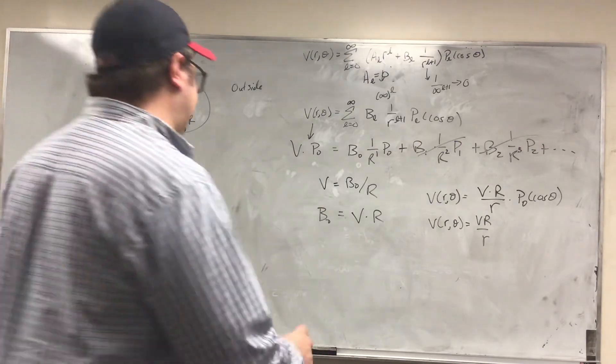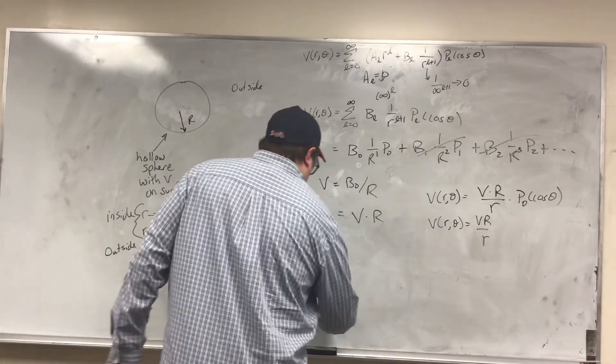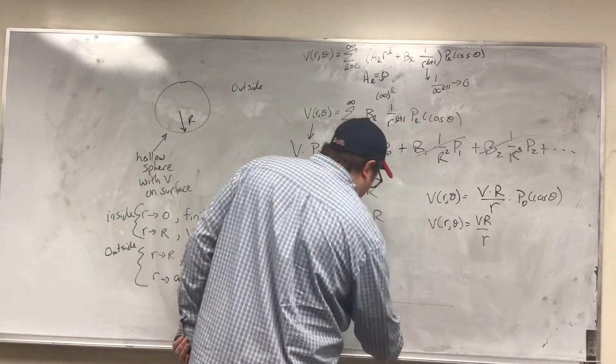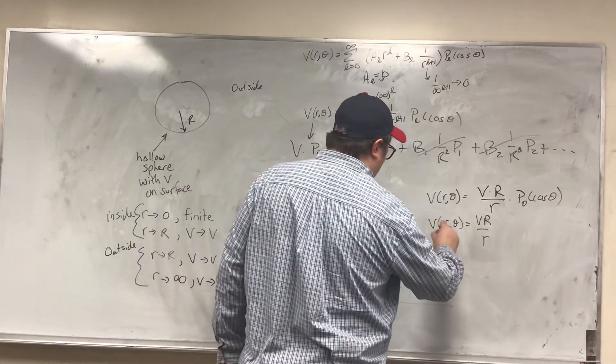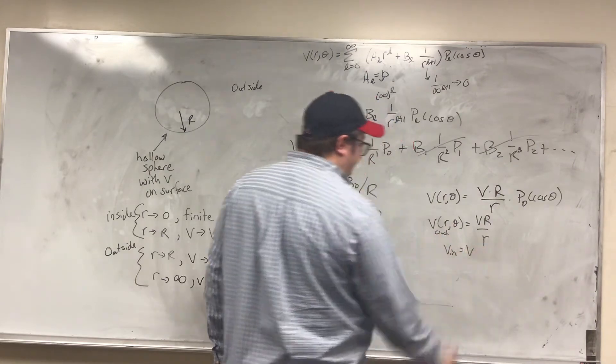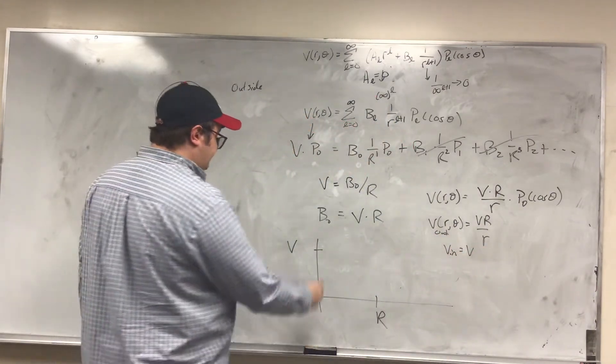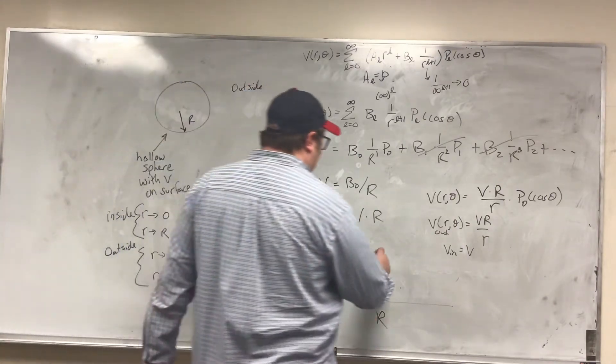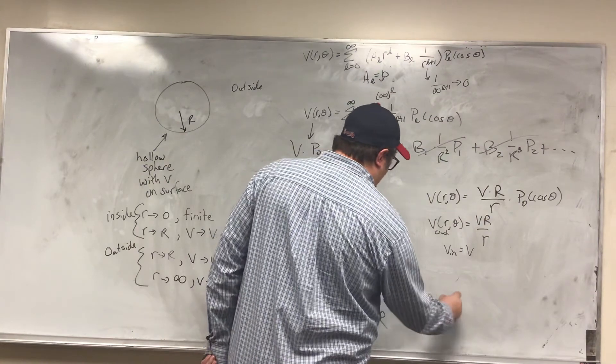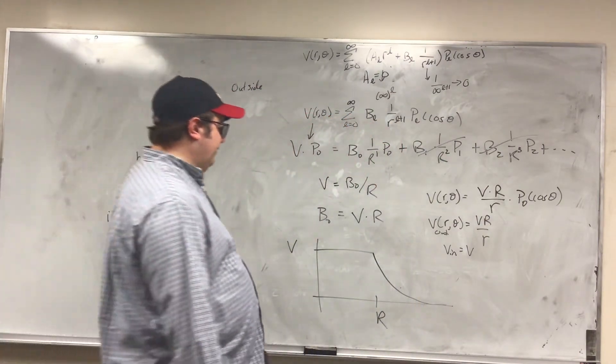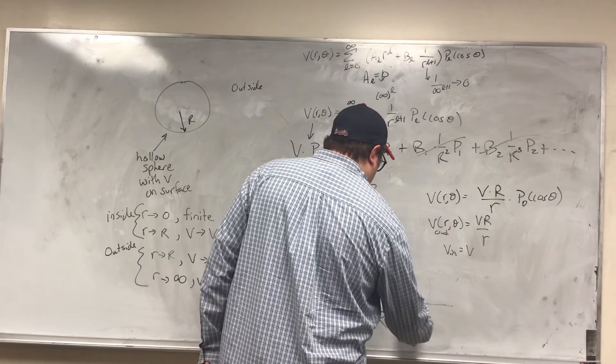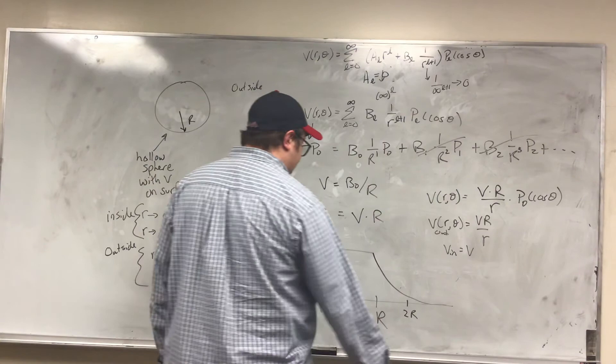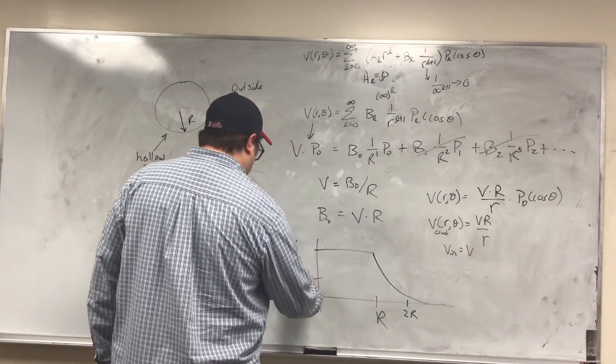So what does it look like if I plot it? Inside the potential, I know it's just V, so it's going to look flat. And then outside, it's going to fall off like 1 over r squared. So I can figure out what it's going to be here at 2r. If I put a 2r here, you get 1 half V.